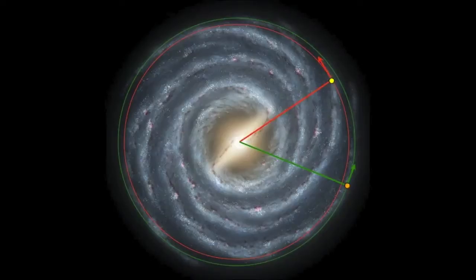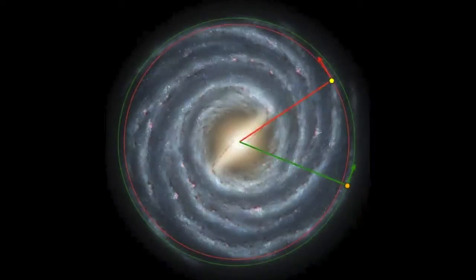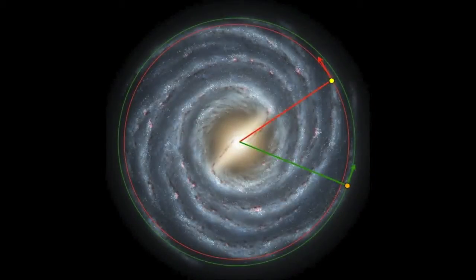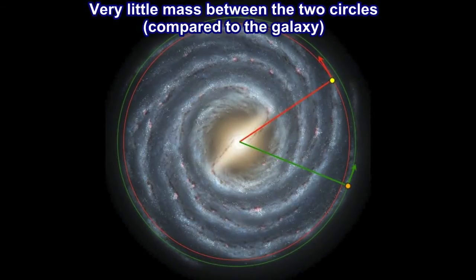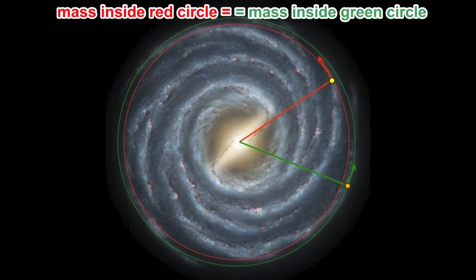The star that we picked in the picture before was already at the periphery of the galaxy. But if we now consider a star a little further away than the previous one, we can see that the ring between these two orbits does contain some mass, but this mass is negligible compared to the mass of the entire galaxy. Therefore, it is safe to assume that the mass of the galaxy inside of circles for both of these stars should be more or less the same.